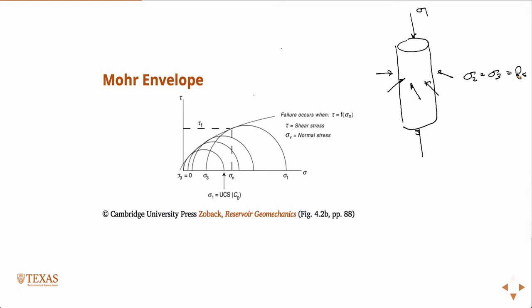So, in other words, at every combination of sigma 1 and sigma 3, where a failure occurs, we draw more circles. So, for example, when sigma 3 is equal to 0, that means there's no confining pressure, and this is an unconfined compressive test. And we draw the Mohr circle on a plot like this.